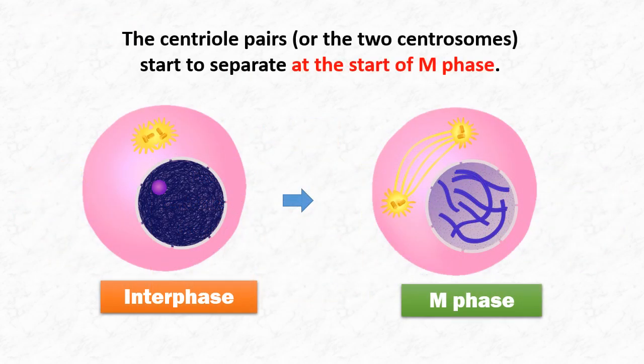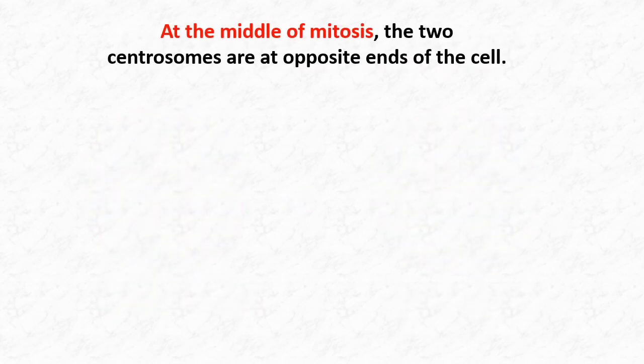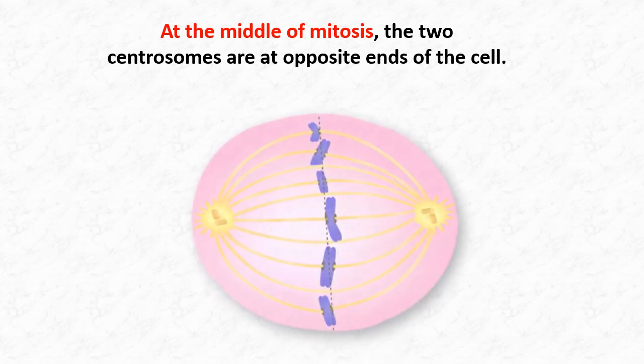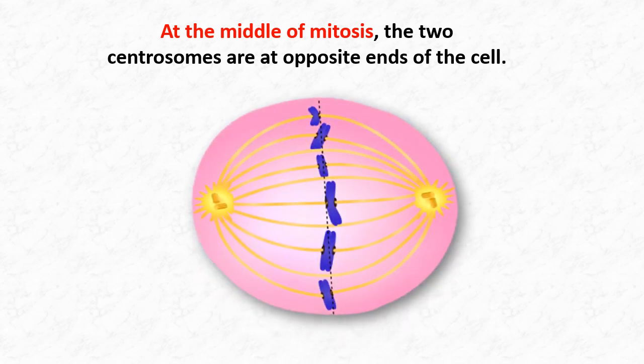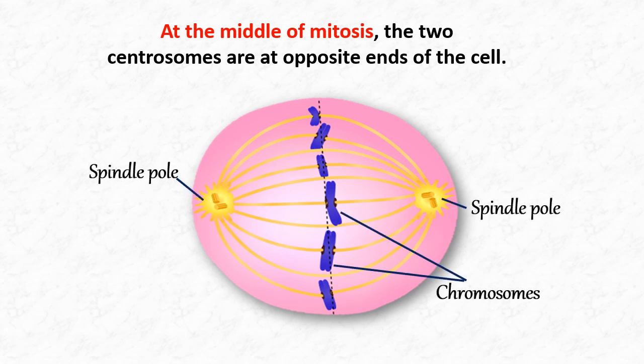The centriole pairs start to separate when the cell enters mitosis or prophase. And as two centriole pairs move apart, the spindle begins to form. The microtubules start to grow out of the separating centrosomes. At the middle of the process of mitosis, the two centrosomes are at the opposite ends of the cell. These centrosomes now are the two spindle poles.